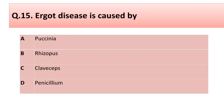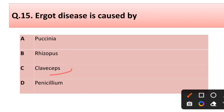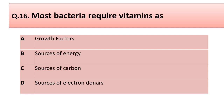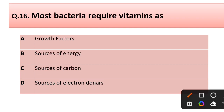Question number fifteen: ergot disease is caused by — options: (a) Puccinia, (b) Rhizopus, (c) Claviceps, (d) Penicillium. Correct answer is option C: Claviceps. Question number sixteen: most bacteria require vitamins as — options: (a) growth factor, (b) source of energy, (c) source of carbon, (d) electron donor. Correct answer is option A: growth factor.